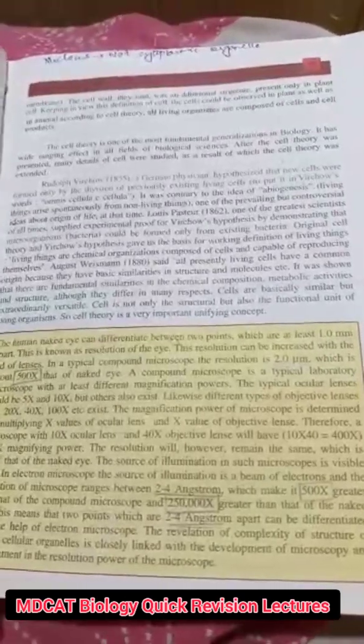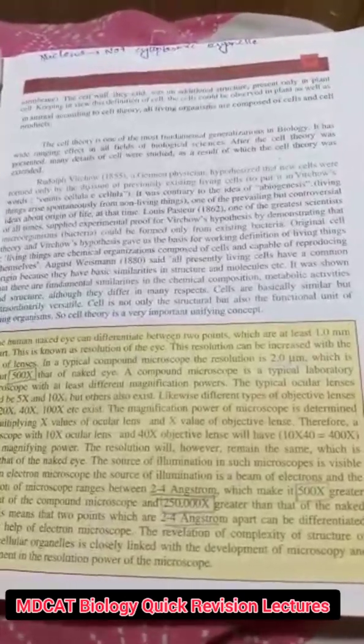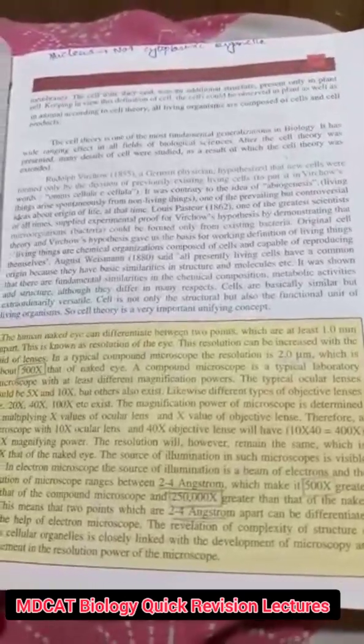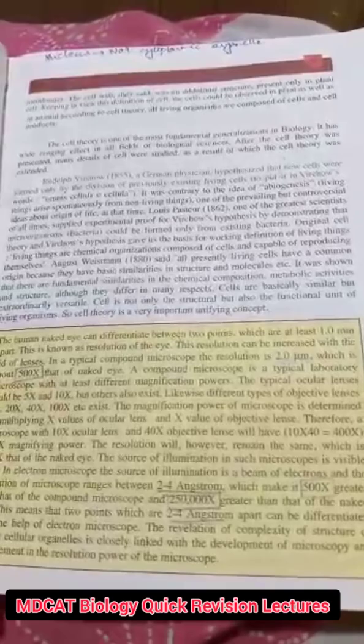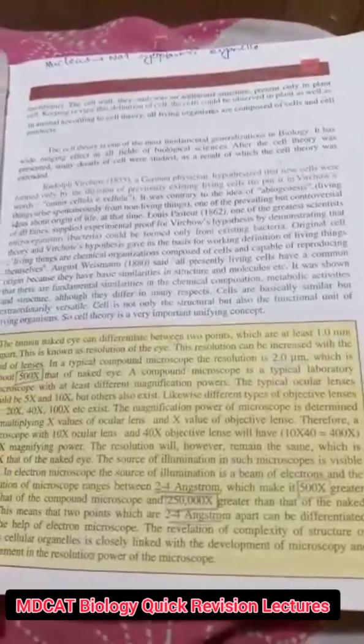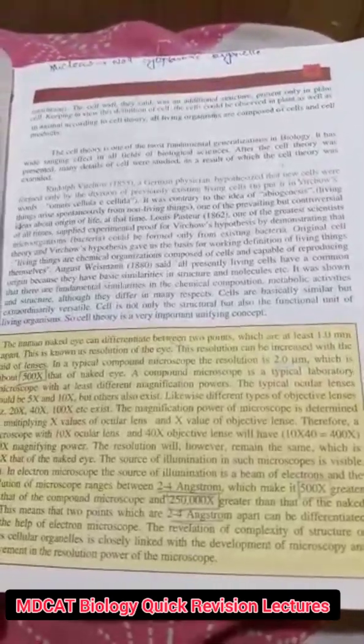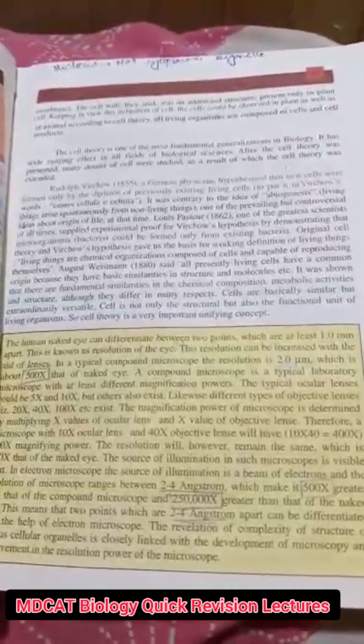With a compound microscope, the resolution is 0.2 micrometers, which means it is 500 times more powerful than the naked eye. The compound microscope has two sets of lenses with magnifications such as 5x and 10x.